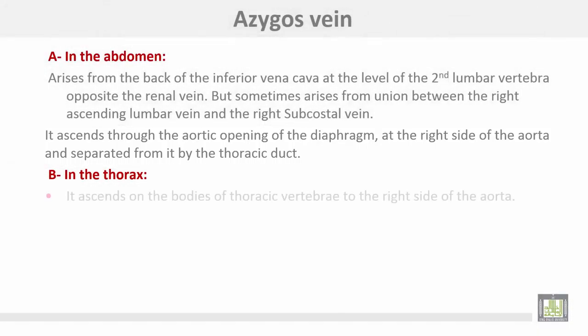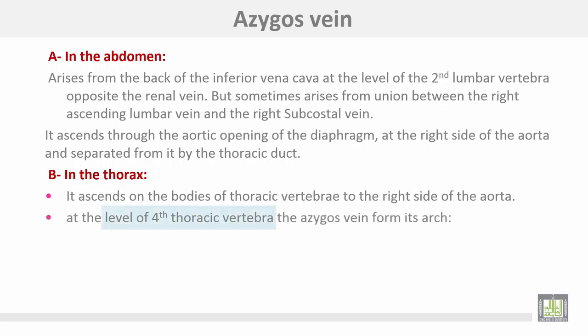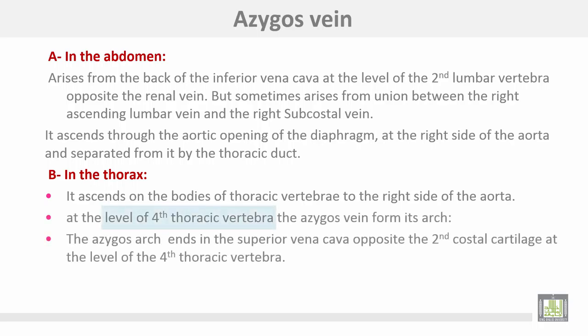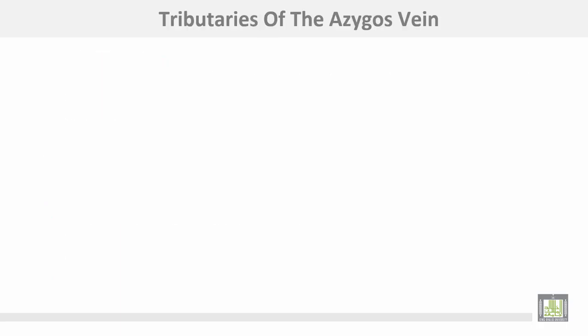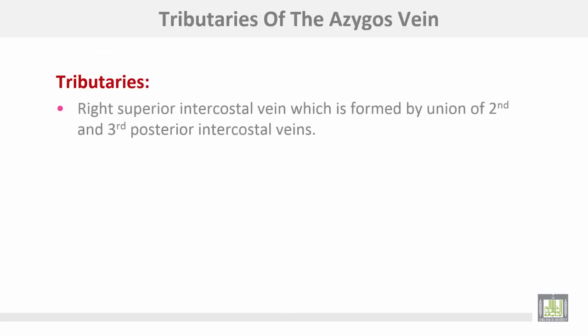In the thorax, it ascends on the bodies of the thoracic vertebrae to the right side of the aorta. At the level of the fourth thoracic vertebra, the azygous vein forms its arch. The azygous arch ends in the superior vena cava opposite the right second costal cartilage at the level of the fourth thoracic vertebra. The azygous vein connects the superior vena cava with the inferior vena cava.